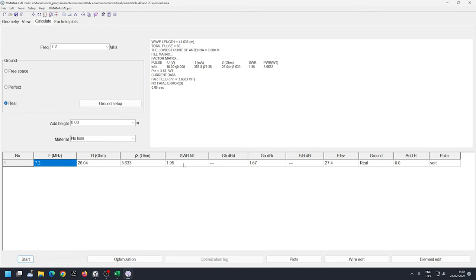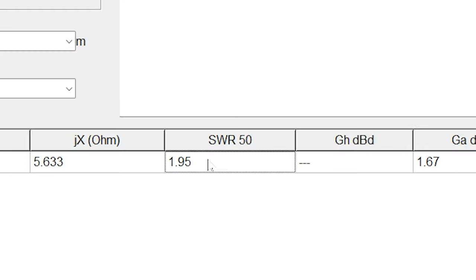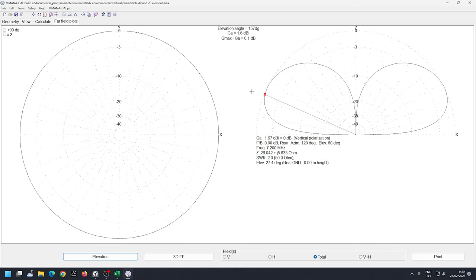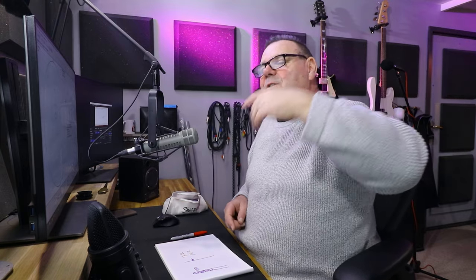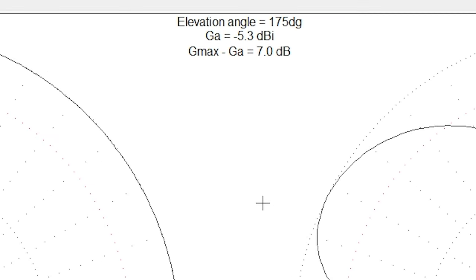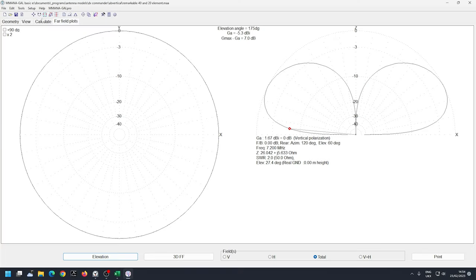Let me just run this at roughly 7.2 megahertz. Ignore the SWR, it says 1.95, I'm not too worried about that - that's easy to tune out. We've got a far field plot that looks like this. If I just drive down here to 175 degrees off the horizon, which is 5 degrees off the horizon, I would expect normally to see a gain of about minus 5. In other words, very low angle. It says here minus 5.3.